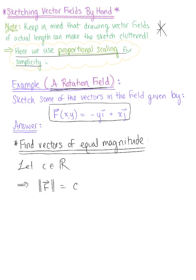We need to find the magnitude of the given vector field. Thinking of our vector field F in component form as (-y, x), and plugging this into our magnitude formula, we have the square root of negative y squared — which gives us y squared — plus x squared, which gives us x squared, all equal to C.